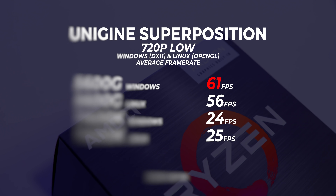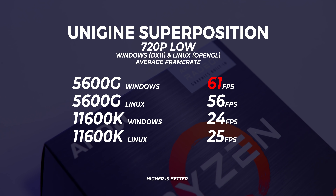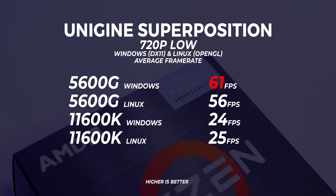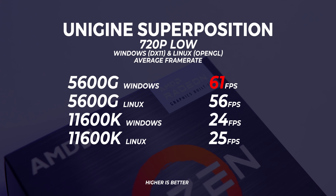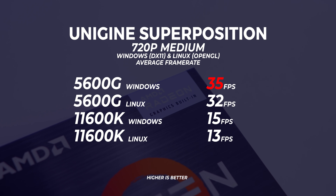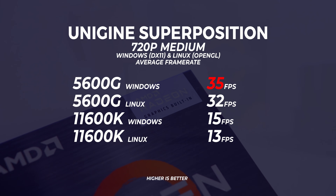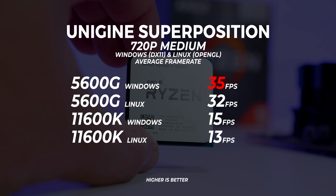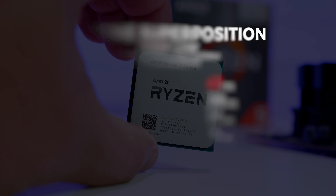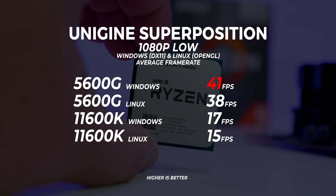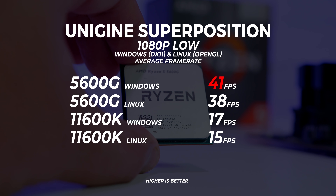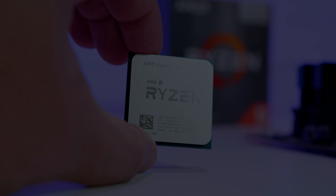In Unigine Superposition we're seeing 61 frames per second at 720p low, with the 5600G in Windows performing best. At 720p medium the 5600G in Windows is also performing the best out of the batch, and at 1080p low the 5600G in Windows again has the best performance.